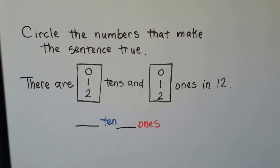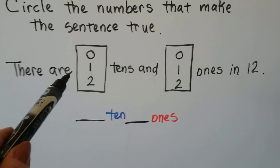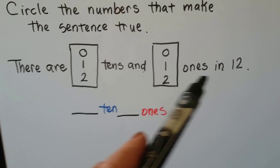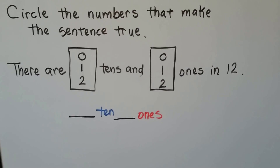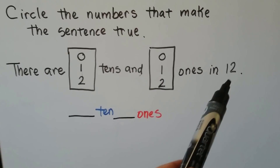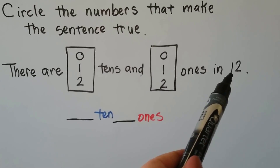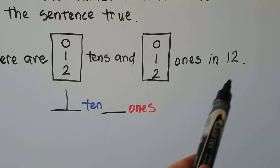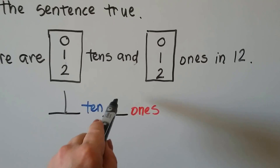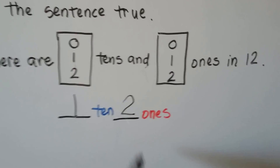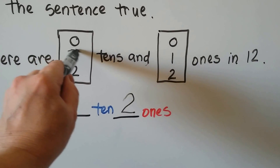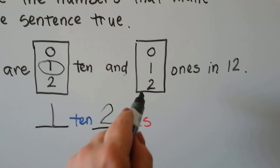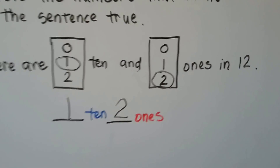Circle the numbers that make the sentence true. There are zero, one, or two tens and zero, one, or two ones in the number twelve. How many tens are in the number twelve? There's one — there's a one in the tens place. How many ones are there? There's two in the ones place. If we want to make this sentence true, we'd say there's one ten and two ones. And it makes the sentence true.